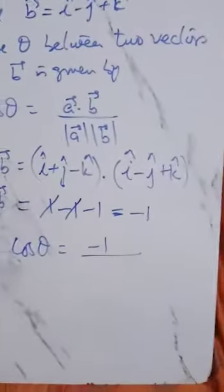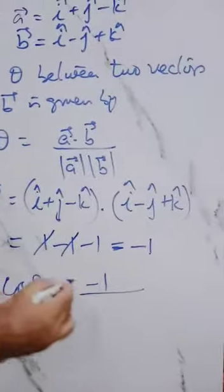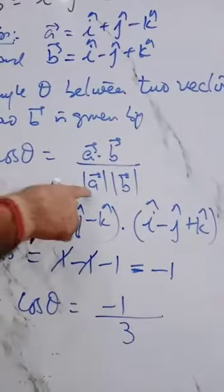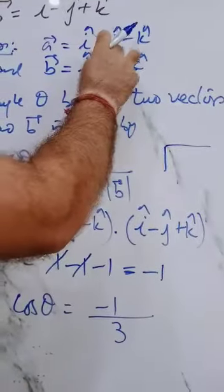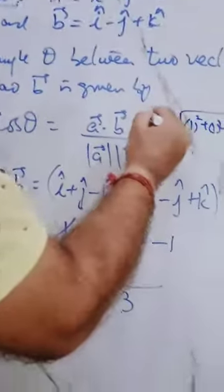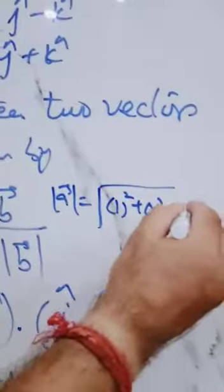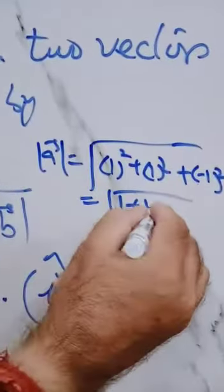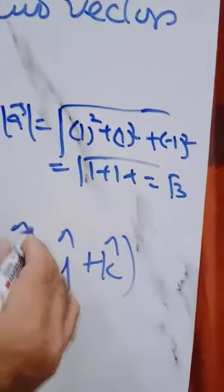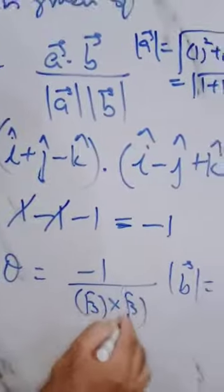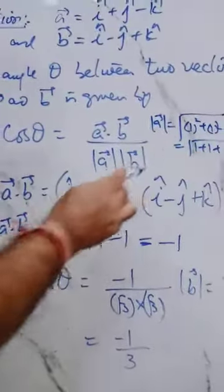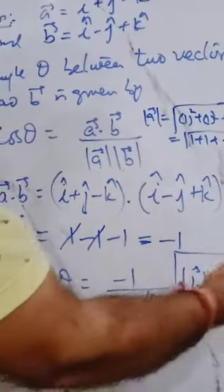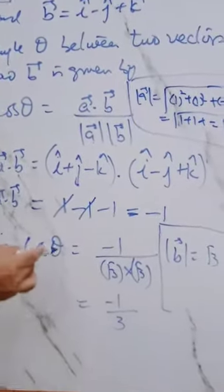So cos theta is equal to minus one upon the magnitudes of a and b. The magnitude of a equals root of one squared plus one squared plus minus one squared, that is root of one plus one plus one, which is root three. Similarly, magnitude of b is also root three. So root three into root three equals three.